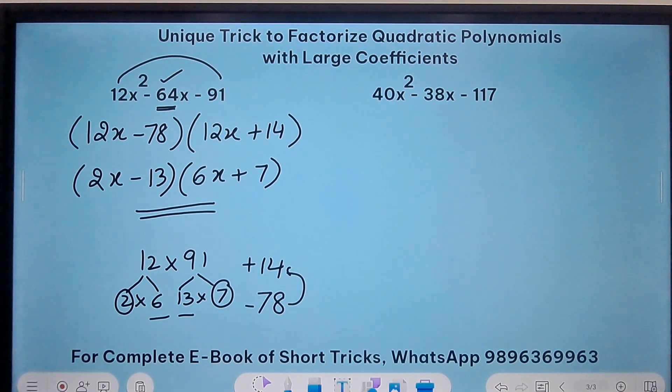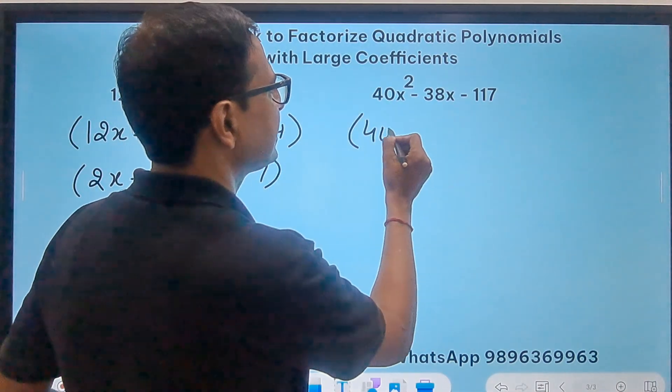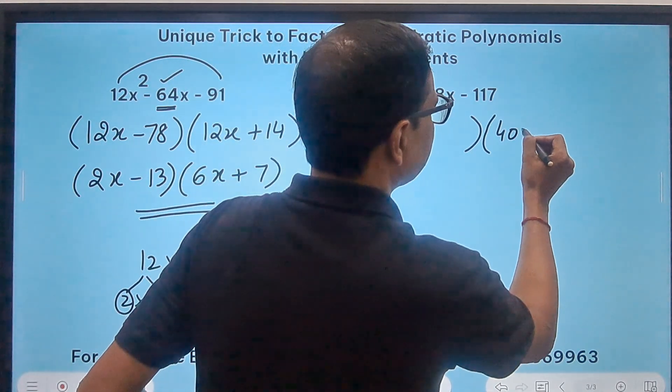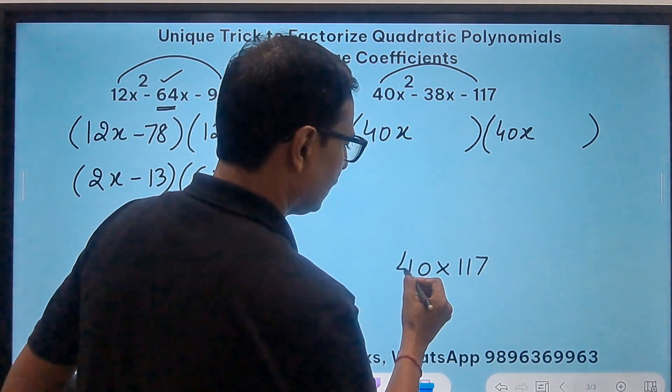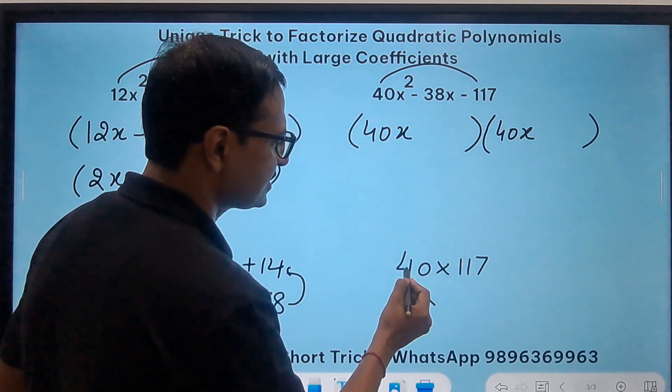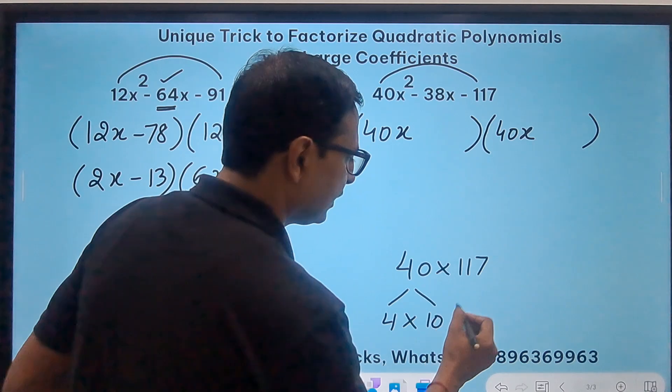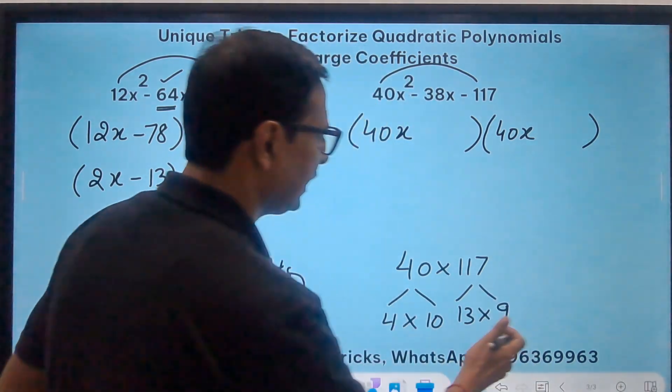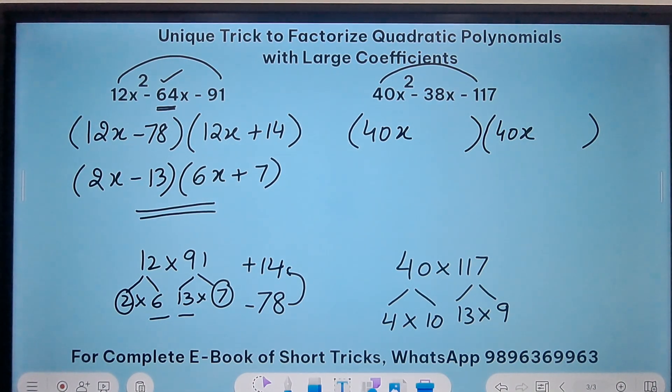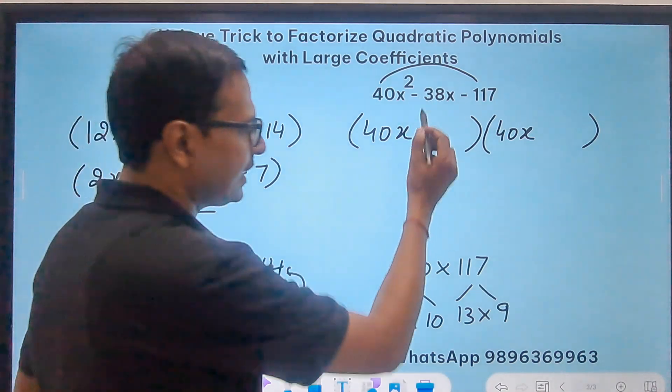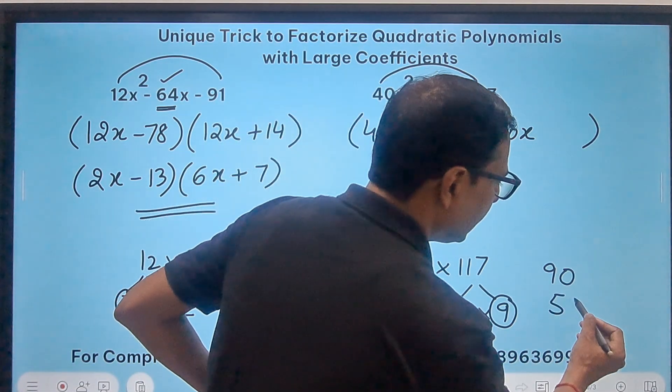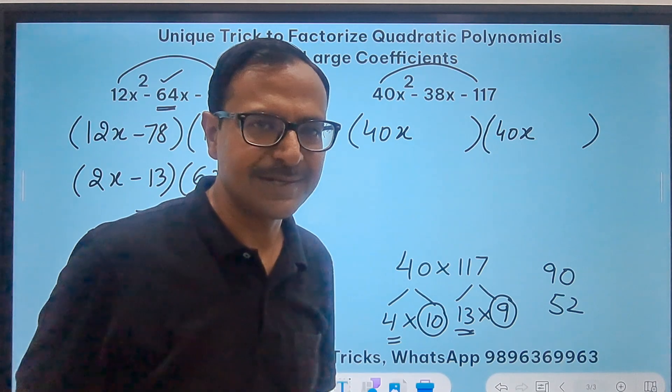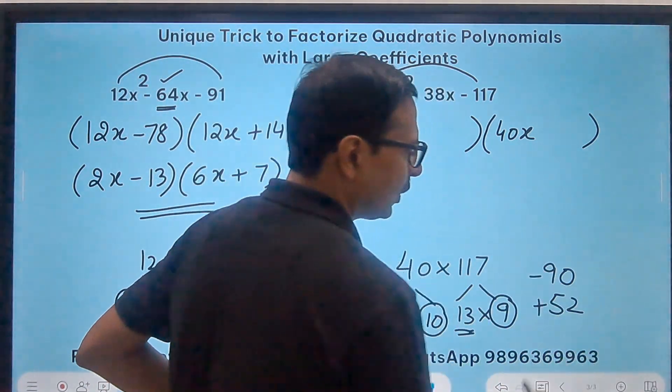Likewise you have the last question there and let's perform the same steps here. So this starts with 40x and the other factor starts with 40x as well. Now 40 times 117. Now 40 is 4 times 10 and this is 13 times 9. 13 times 9 is 117. So let's group them now. I need a 38. So 10 times 9 is 90 and 13 times 4 is 52, and the difference between 90 and 52 is 38. Negative 38 means larger negative and smaller positive.